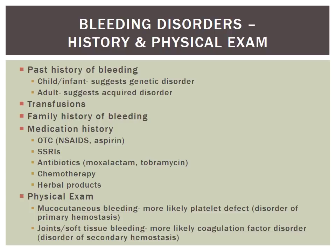A medication history is very helpful when looking at bleeding. Common over-the-counter causes include NSAIDs or chronic aspirin use. SSRIs can cause bleeding because serotonin is involved in platelet aggregation — decreased platelet activation can lead to bleeding. Certain antibiotics, most commonly tobramycin, may contribute to bleeding. Chemotherapeutics may also cause bleeding issues. Several herbal products should be discussed with patients, including garlic, ginseng, and most commonly vitamin E and fish oil.